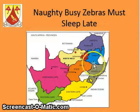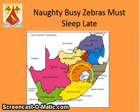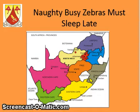Lesotho is quite special because it's completely landlocked — it's completely inside of South Africa. Swaziland shares a border with South Africa and also with Mozambique.